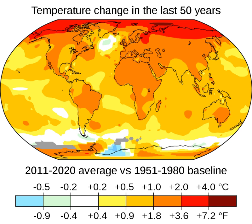Tipping points and long-term impacts: the greater the amount of global warming, the greater the risk of passing through tipping points — thresholds beyond which certain impacts can no longer be avoided even if temperatures are reduced. An example is the collapse of West Antarctic and Greenland ice sheets, where a temperature rise of 1.5 to 2 degrees Celsius may commit the ice sheets to melt. Some large-scale changes could occur over a short time period, such as a collapse of the Atlantic meridional overturning circulation, which would trigger major climate changes in the North Atlantic, Europe, and North America. The long-term effects of climate change include further ice melt, ocean warming, sea level rise, and ocean acidification.